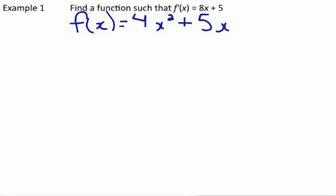So the way that we deal with that is we say that we had plus C at the end. C just represents a constant. We don't know what it was, because when we took the derivative to get 8x plus 5, the constant derivative goes to 0. So that is the function with derivative 8x plus 5.